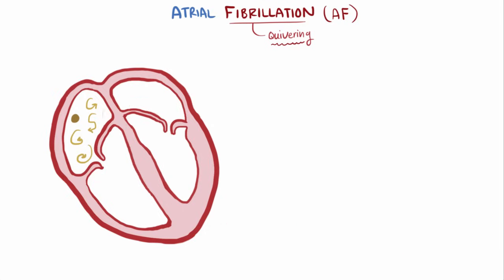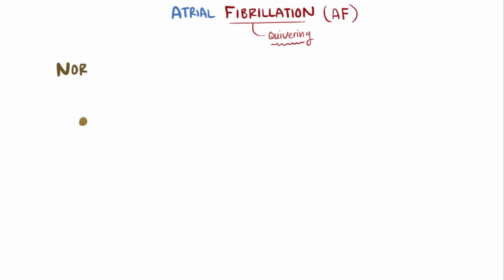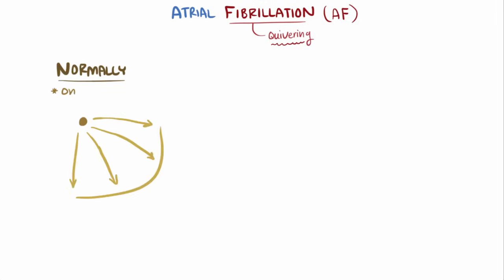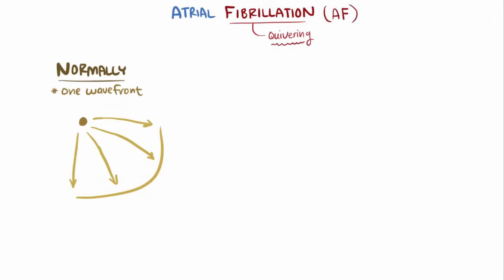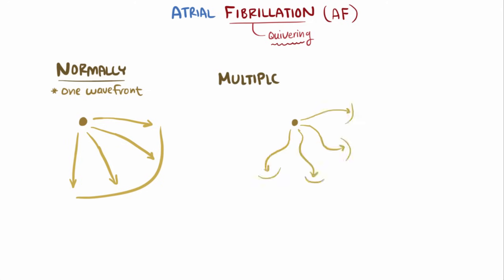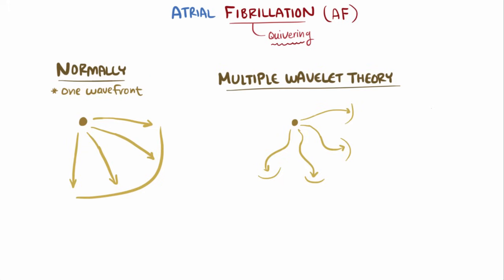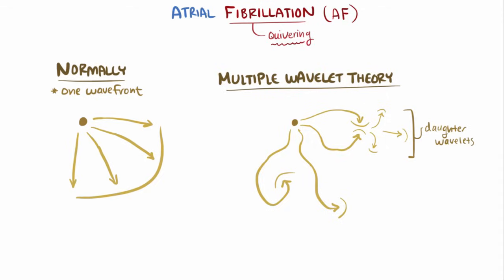Normally, with tissue that's the same, you get essentially one wavefront of conduction that moves through the atria. With different tissue properties, multiple wavelets are thought to develop — called the multiple wavelet theory. These wavelets conduct randomly around the atria, sometimes colliding and creating new daughter wavelets.